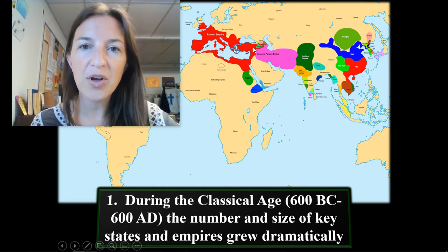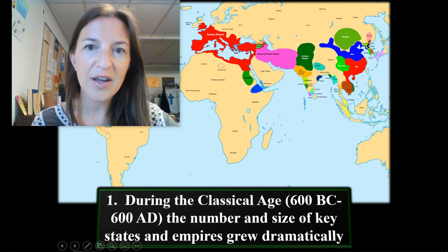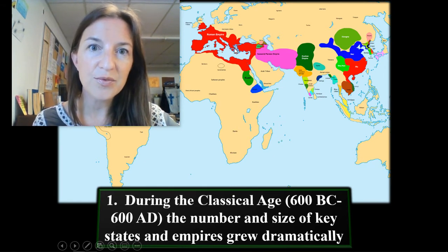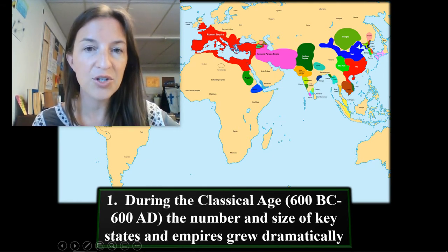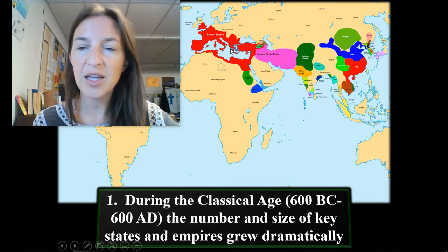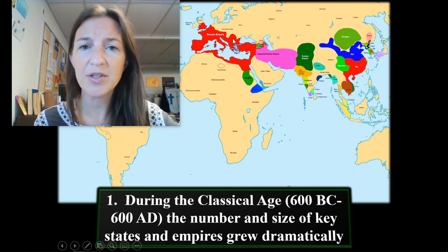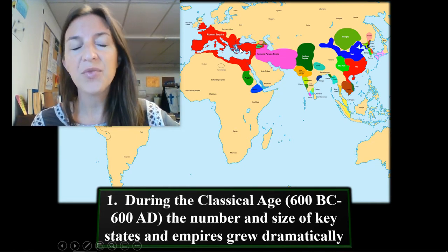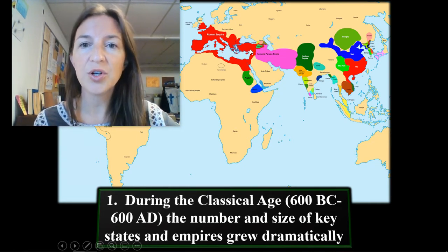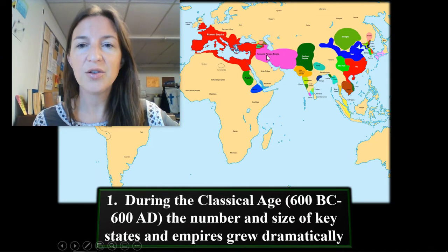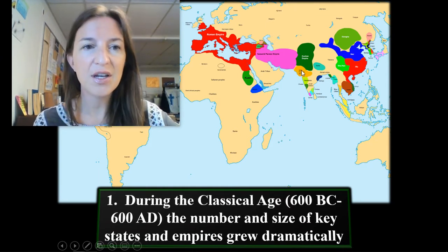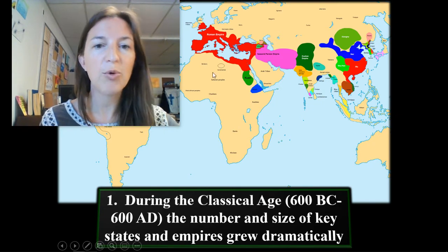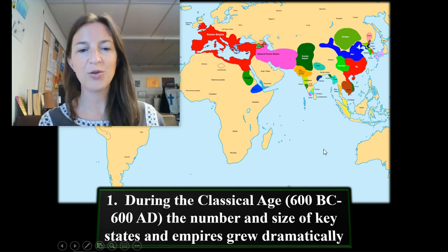Before Rome conquers all of this southern European region and northern Africa, Alexander the Great is going to have conquests from north of Greece. He's going to go east towards Turkey, conquer Egypt and Persia and part of India, and then he's going to die of malaria. But we'll talk about Alexander the Great in a bit.